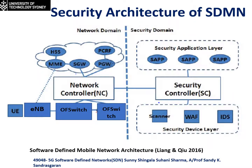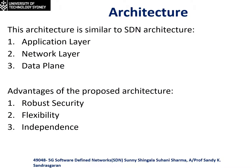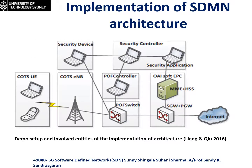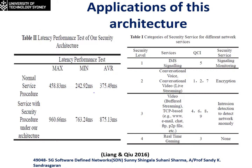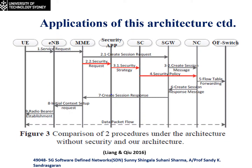This architecture of SDN focuses on specific security problems. It provides security services through a security domain which is loosely coupled with the network domain through a logically centralized security controller. The three main advantages of this architecture are robust security, flexibility, and independence. The demo setup of the security SDN architecture with current LTE technology is shown, along with a table showing the outcome of latency performance tests, and a graph comparing with-security and without-security architectures.